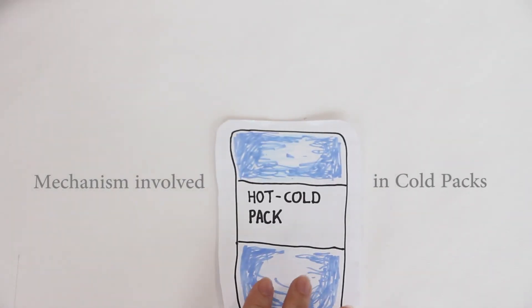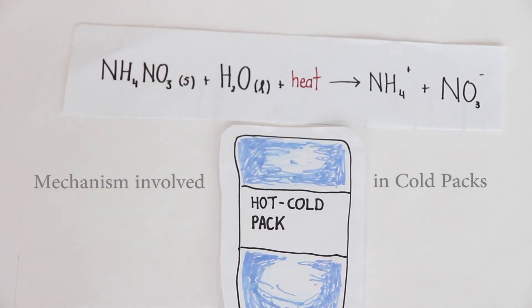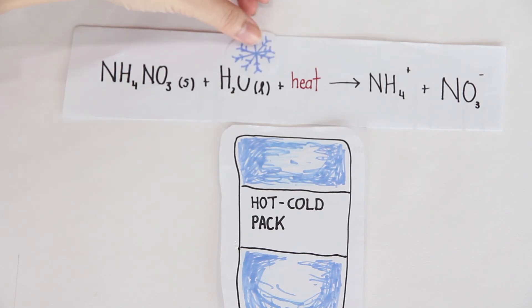Ammonium nitrate dissolves as it absorbs heat. When it is doing so, the temperature of the system, in this case is water, has a lower temperature and thus can be used as a cold pack.